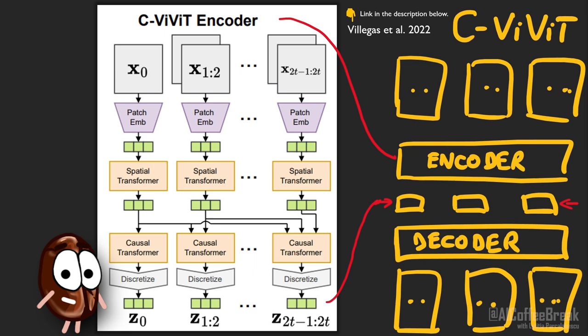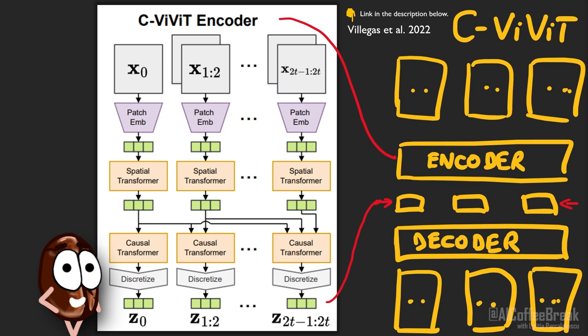The idea with CViViT is to have a general purpose video encoder that, having seen lots of video data and having learned about the visual world, can encode any video into video tokens and decode this back into video. But the authors want this encoder-decoder to work for any video — meaning for variable length video — so they decide for an autoregressive architecture.